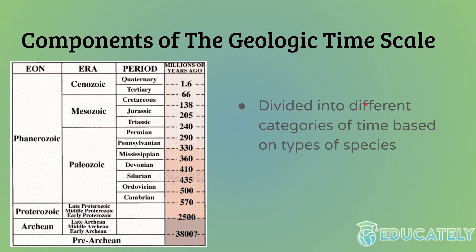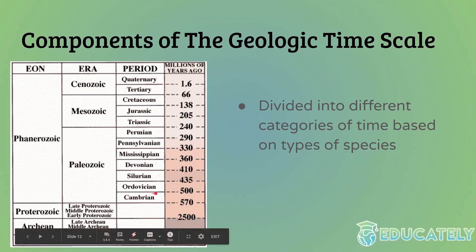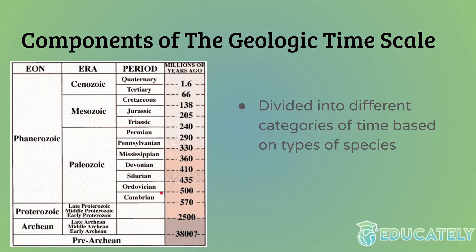The scale is divided into different categories of time — divisions like Cenozoic, Mesozoic, Paleozoic — based on the different types of species that were around in different periods. Different periods are marked by the types of species that were around during them, and also by certain events that happened. For instance, at the end of the Cretaceous, it ended in an asteroid impact, which was the shift from the Mesozoic to the Cenozoic and from the Cretaceous to the Tertiary period.